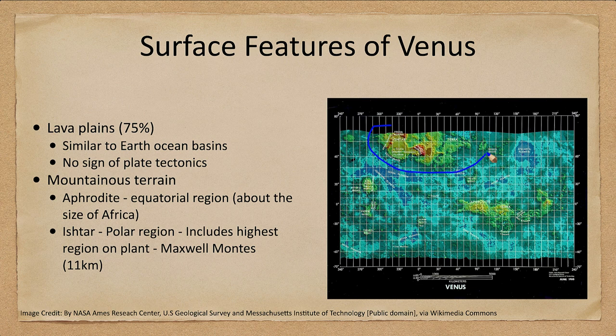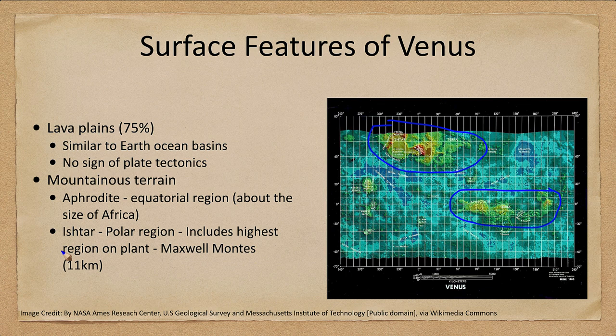What I mean by that is that it has some very high continental areas, such as Ishtar up here and Aphrodite in a more equatorial region, that look not that different than continents here on Earth, and some very low-lying basins, much as you would have in the oceans of Earth. So if Venus were a little cooler and filled with water like Earth, they would not look that different. Certainly the exact outlines of the continents would not be the same, but the structures we're seeing would be very similar.